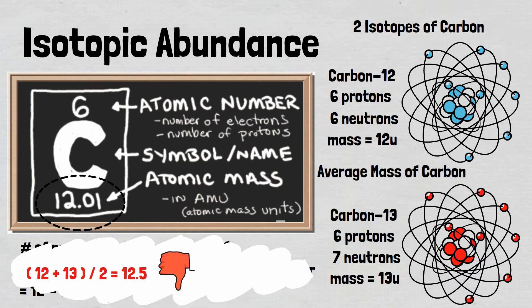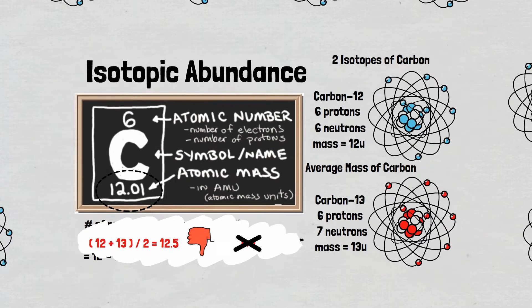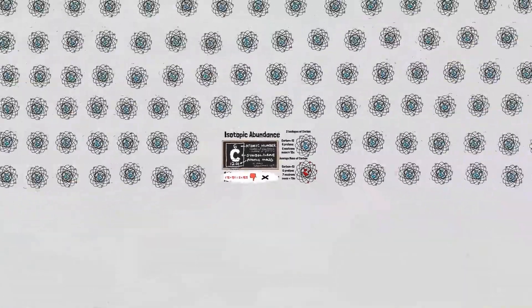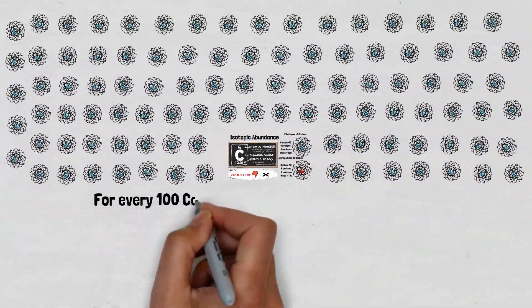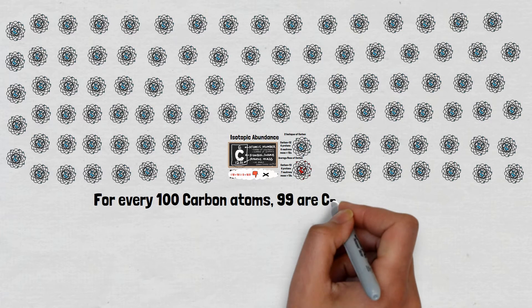This is because we do not find carbon-12 and carbon-13 in equal proportions in nature. Let's zoom out for a larger sample size. This is isotopic abundance, the proportion of each isotope found in nature.